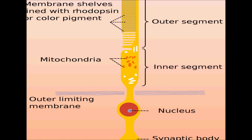This is the structure of a rod cell. It has an outer segment and an inner segment. The outer segment contains shelves or chambers lined with rhodopsin, the color pigment. There is also the nucleus of the rod cell and synaptic bodies through which one rod is connected to another. Rhodopsin is a vitamin A derivative.